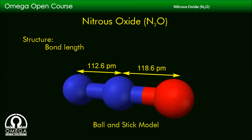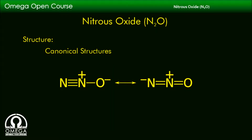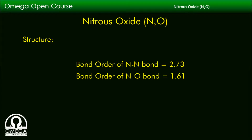Look at the ball and stick model of Nitrous Oxide. The N-N bond length is 112.6 picometers and the N-O bond length is 118.6 picometers. These are the two canonical structures of Nitrous Oxide. The bond order of the N-N bond is 2.73 and the bond order of the N-O bond is 1.61.